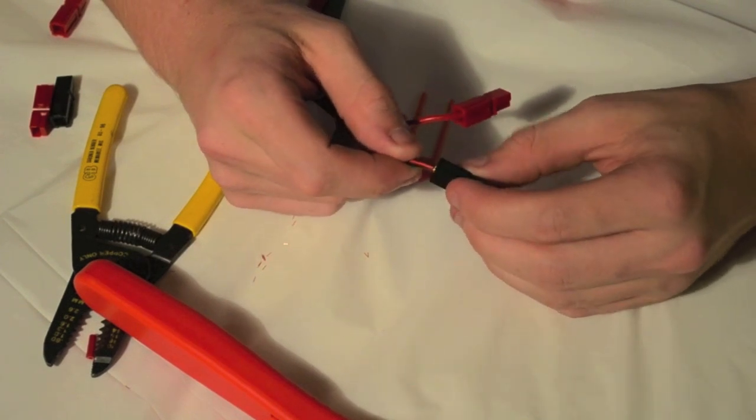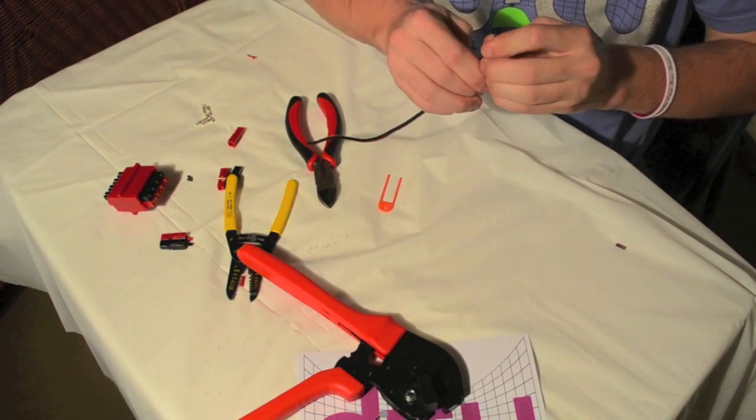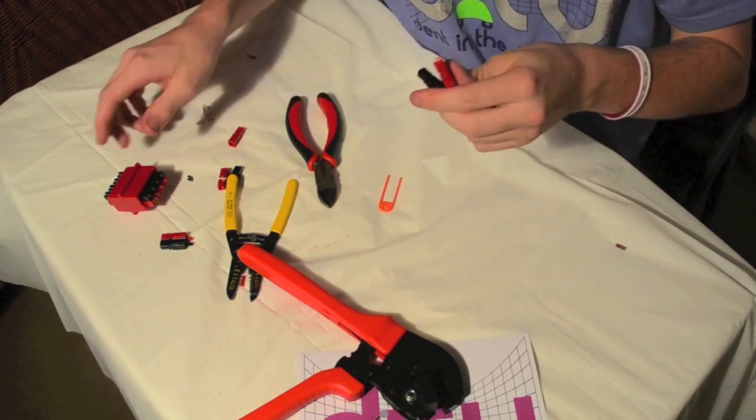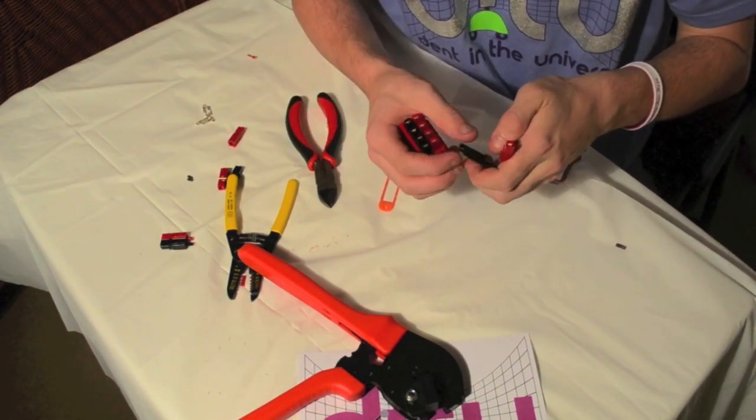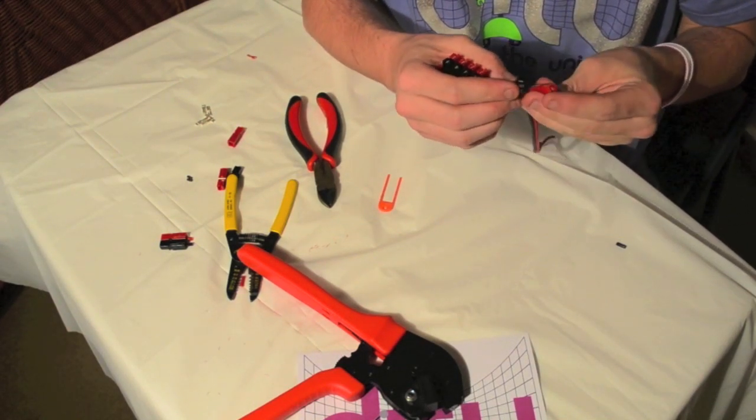After you have crimped your leads, you no longer need the crimping tool. Then take the plastic housing for your leads and place them over your leads until you hear a click. This means that the plastic housing is firmly set in place.